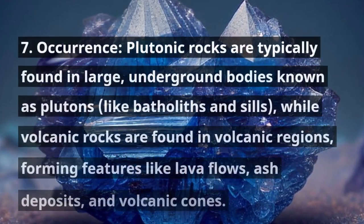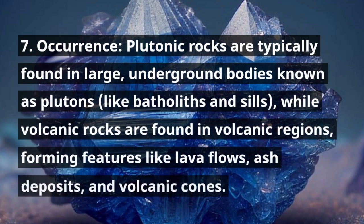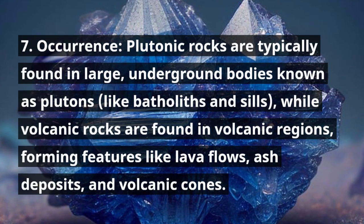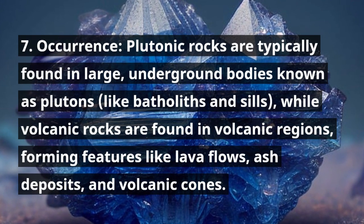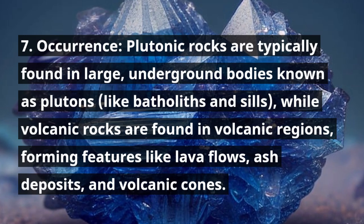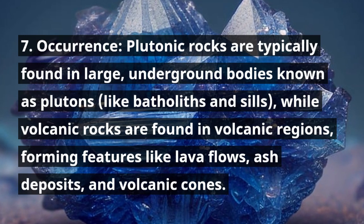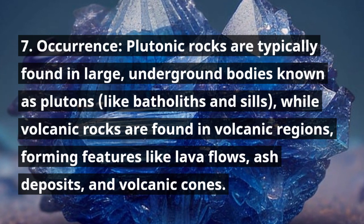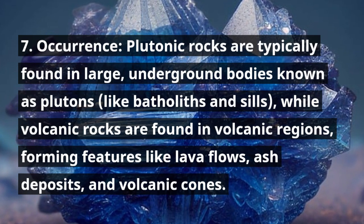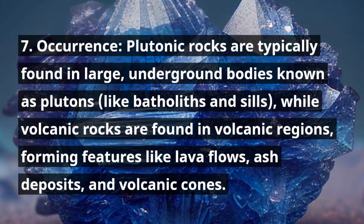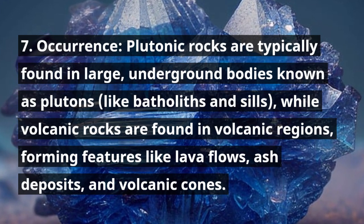Occurrence: Plutonic rocks are typically found in large, underground bodies known as plutons, like batholiths and sills, while volcanic rocks are found in volcanic regions, forming features like lava flows, ash deposits, and volcanic cones.